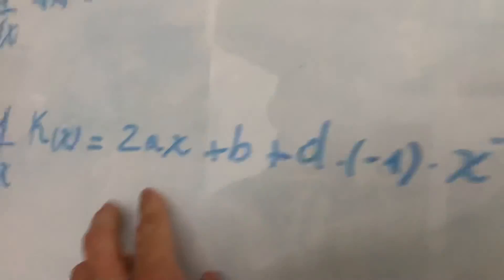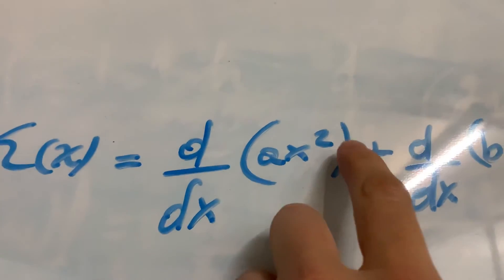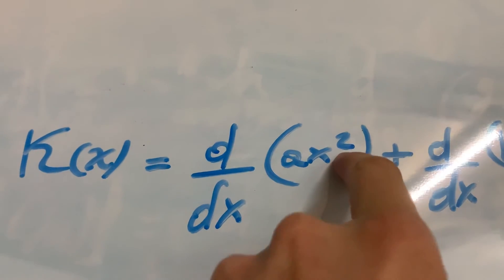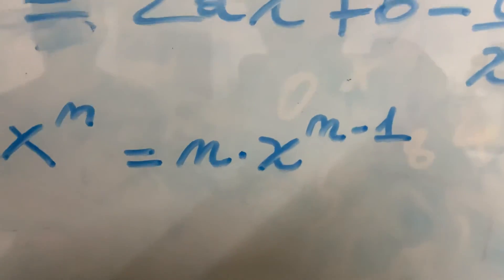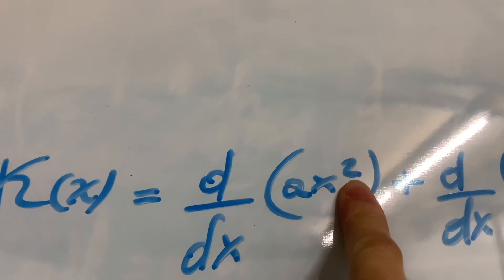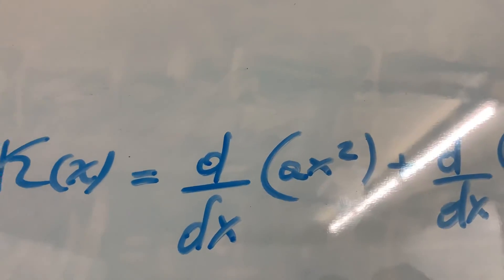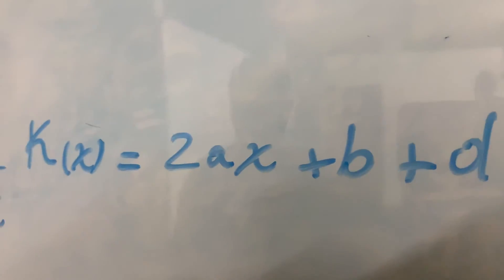So we have here 2ax because 2 comes in the front and according to this rule, 2 minus 1 is going to be 1 here. So 2ax to 1 which means 2ax.